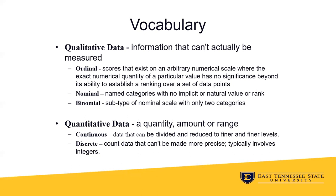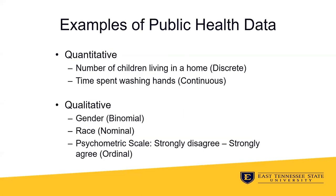Quantitative data are those that express a certain quantity, amount, or range. Within this class of data we have continuous data, those that can be divided and reduced to finer and finer measures, and discrete data, which cannot be made more precise and is represented only in whole numbers. Examples within each class discussed in this module that you have or will encounter working in public health are the number of children living in homes, which is a quantitative discrete measure; time spent washing hands, which is continuous; and qualitative variables such as race and gender along with psychometric scales included in survey instruments. That wraps up our discussion of types of data and how we can organize data so that we can have quick reference for analysis. Thank you.